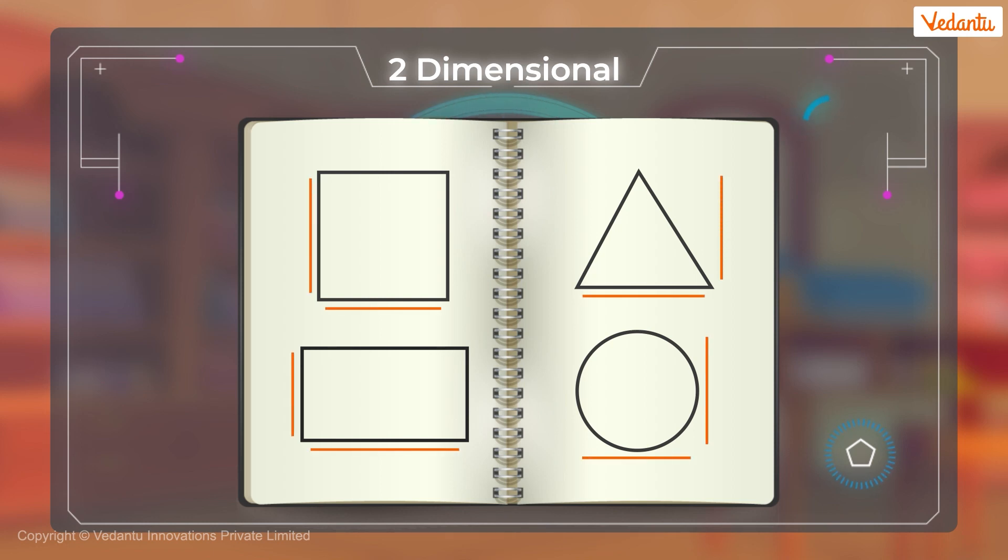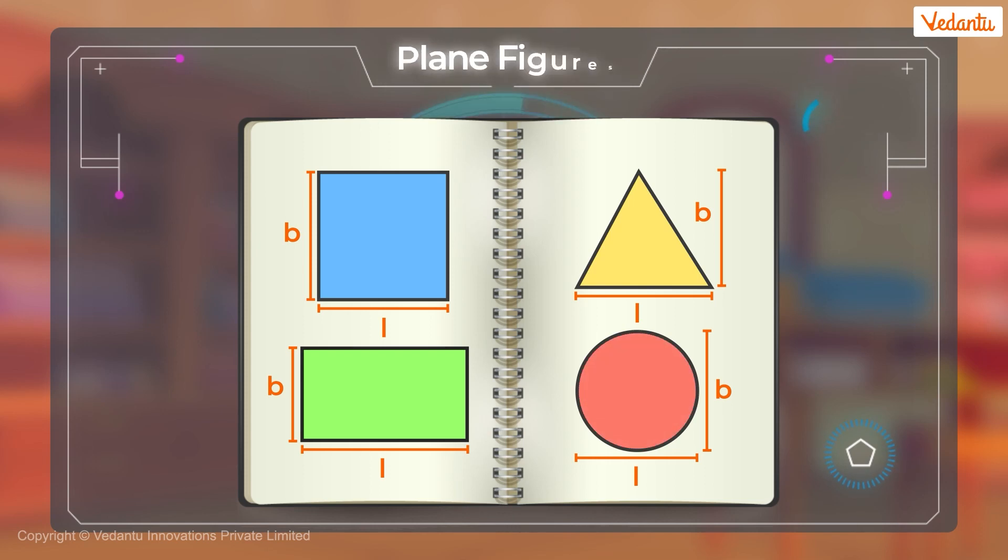They have only two measurements or dimensions, breadth and length. So, we call them 2D figures. And as they can be drawn completely on one plane, they are also called plane figures or shapes.